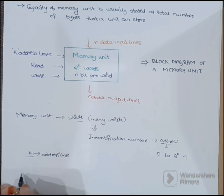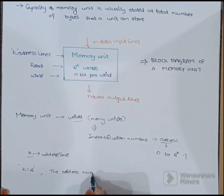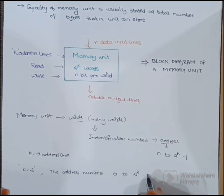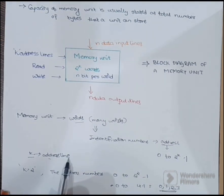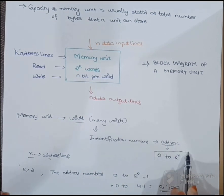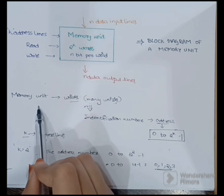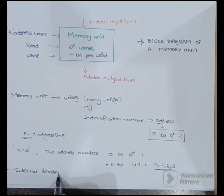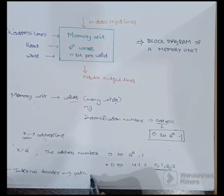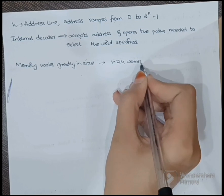The address can range from 0 to 2^k minus 1, where k refers to the address line number. For example, if k equals 2, the address numbers can range from 0 to 2^2 minus 1, that is 0 to 3. The selection of a specific word inside a memory unit is done by applying a k-bit address to the address lines, and there is an internal decoder which creates a path to the selected word.